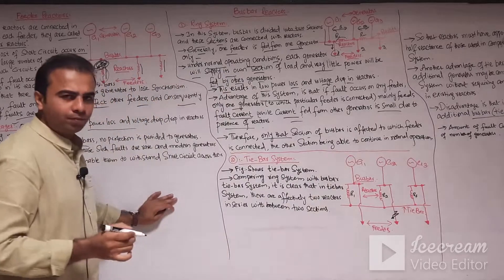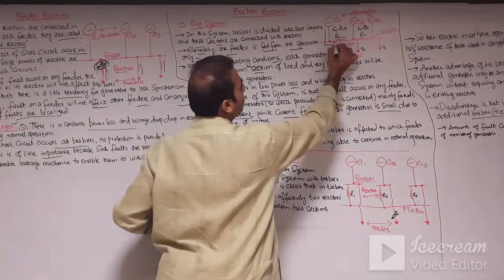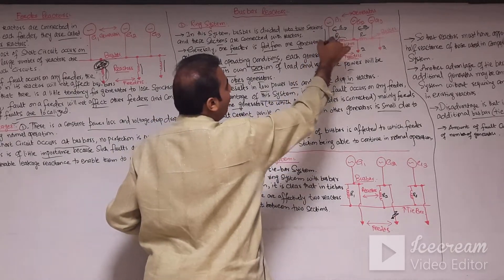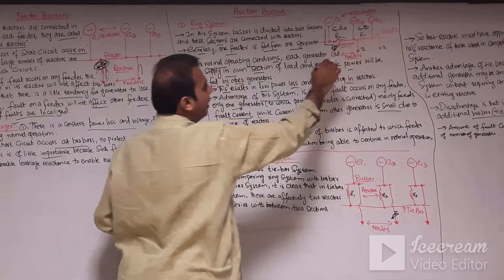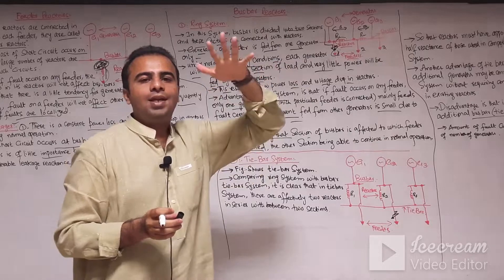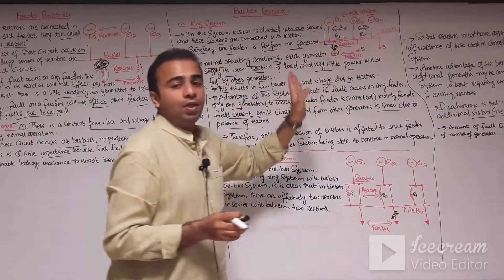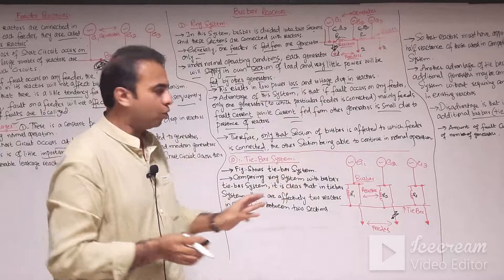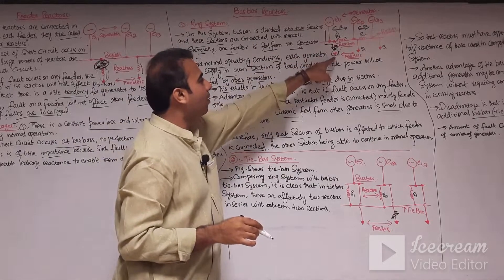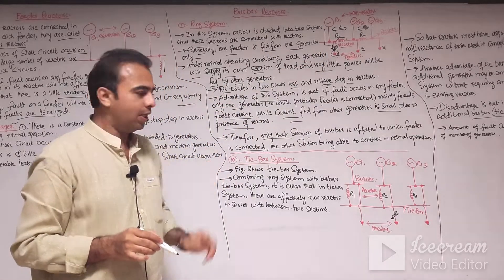Therefore, only that section of the bus bar which the faulty feeder is connected to is affected, while other sections continue their normal operation. If a fault occurs on feeder 1, G1 generator is affected while G2 and G3 continue running under normal operating conditions, because the reactors provide additional reactance to limit the short circuit current on the G1 side.